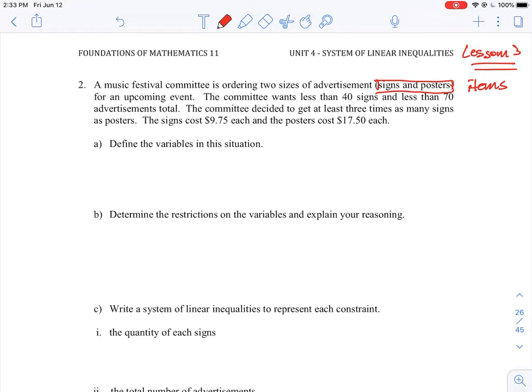This should tell us that we need to assign these to variables to optimize. The committee wants less than 40 signs and less than 70 advertisements in total. So this is also now telling us the restrictions on each of those items. Let's just jump into the question here. First one says, define the variables in this situation. So I would just let x equal the number of signs, and then we will let y equal the number of posters. We are going to be optimizing the numbers of these at some point.